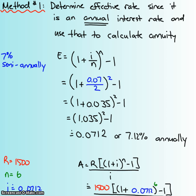Here's method number one. If we know that we're actually making $1,500 payments every year on an annual basis, why don't we just change our 7% nominal interest rate to an effective interest rate? Because an effective interest rate is annual, and then that annual compounding period will match the annual payments of $1,500.